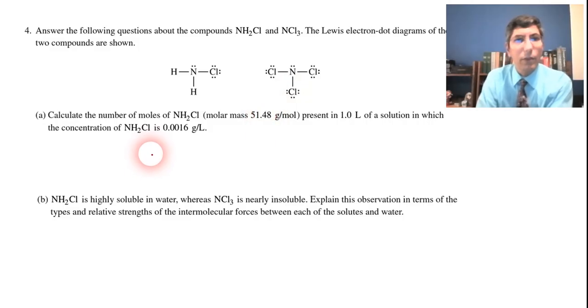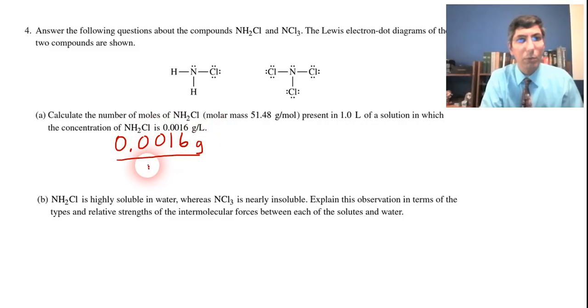Part A tells us that we have one liter of a solution in which the concentration of NH2Cl is 0.0016 grams per liter. So all we have to do is take this 0.0016 grams per one liter and convert that to moles. We put grams on the bottom and one mole on top. They were nice enough to tell us the molar mass, it's actually 51.48 grams per mole in that compound.